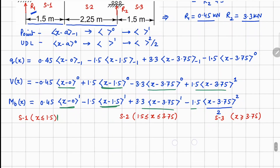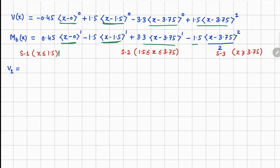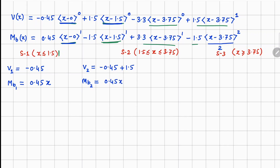In Segment 1: V1 = −0.45 and M_b1 = 0.45x. In Segment 2: V2 = −0.45 + 1.5 = 1.05, and M_b2 = 0.45x − 1.5(x − 1.5), which simplifies to M_b2 = −1.05x + 2.25.